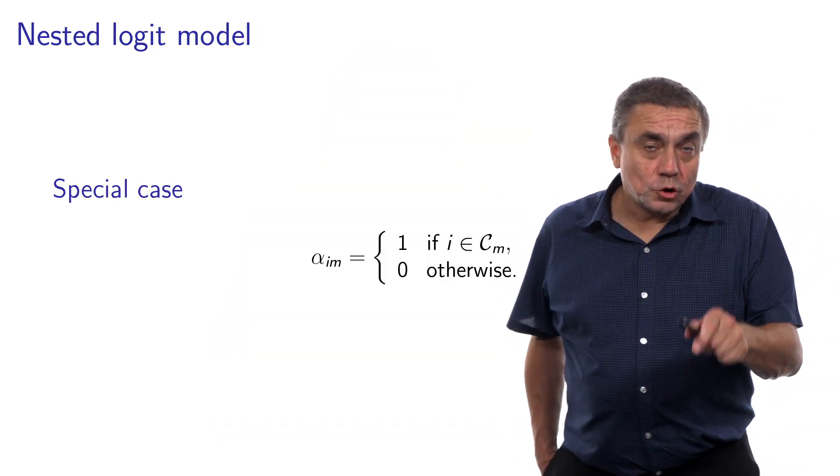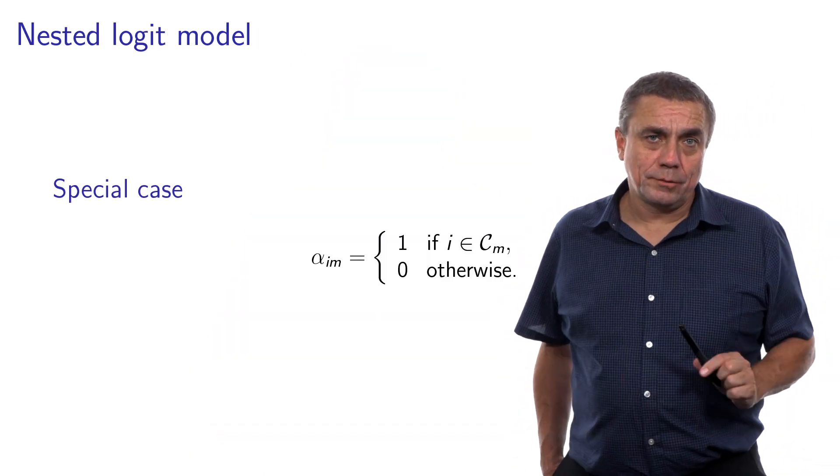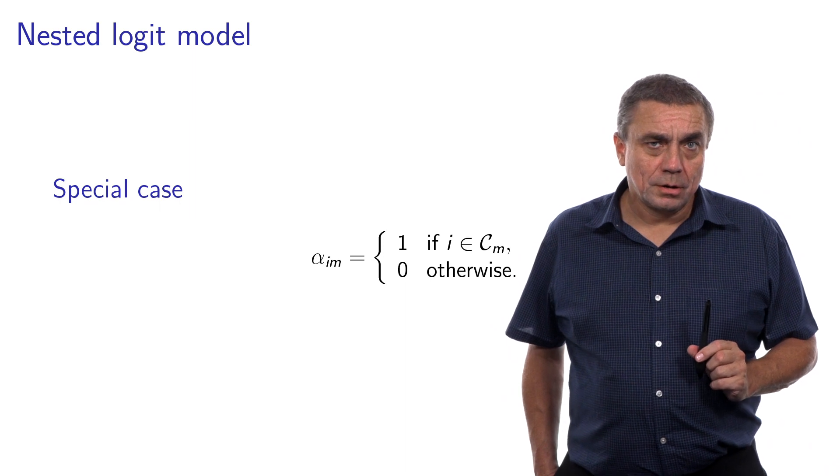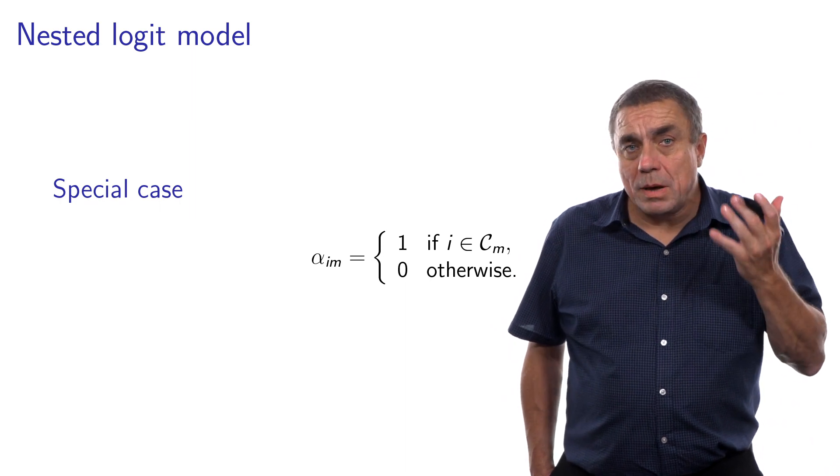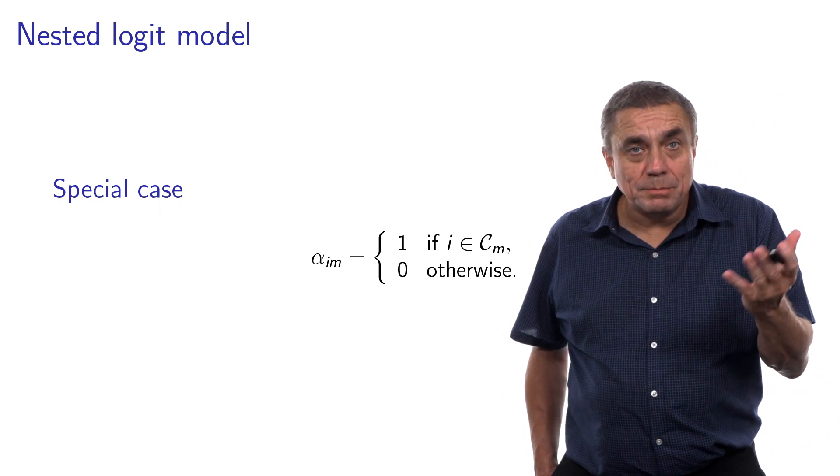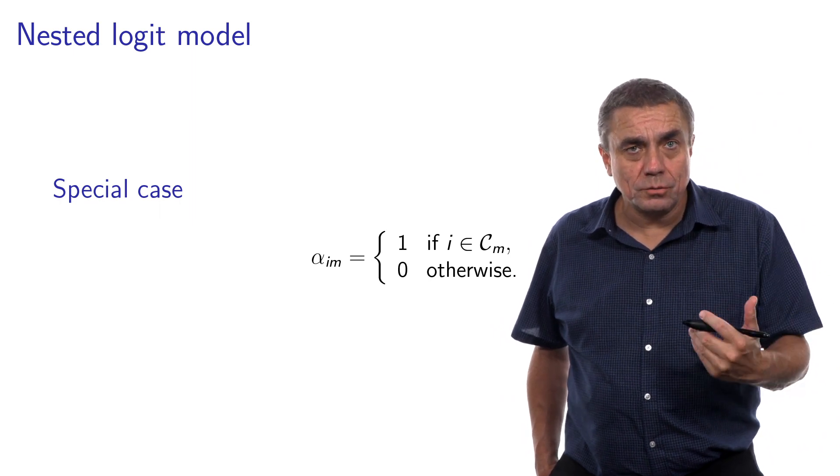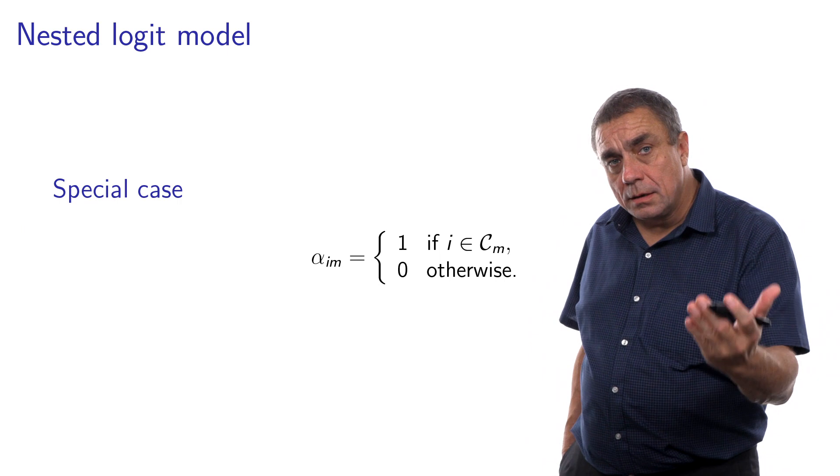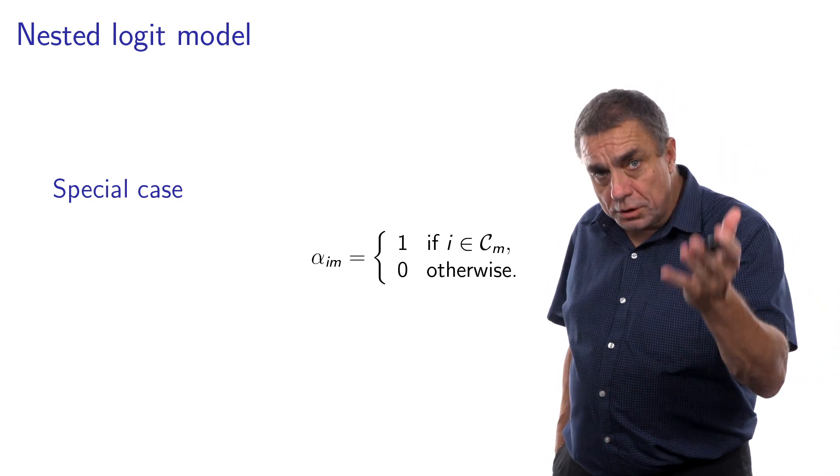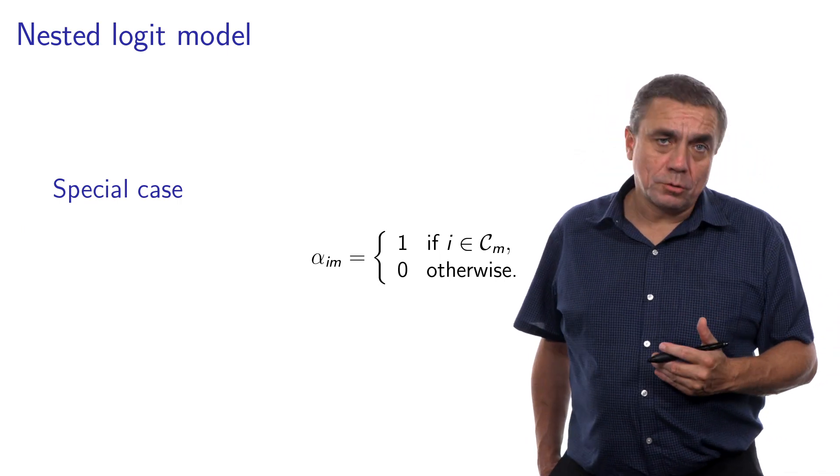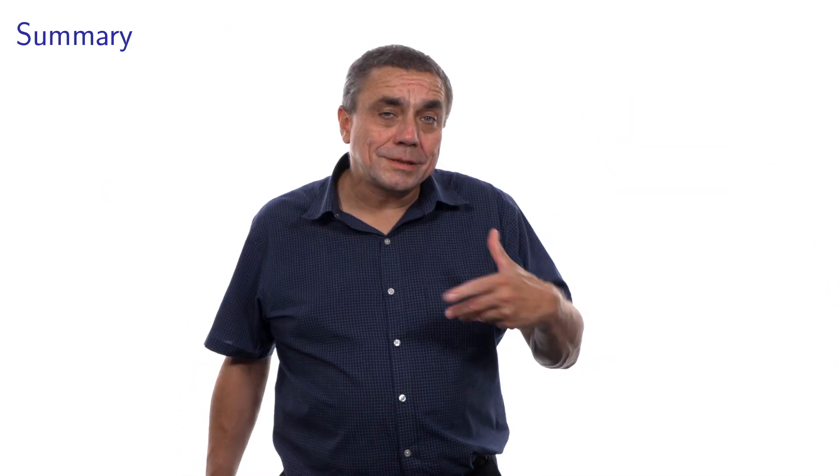And interestingly, the nested logit model is a special case of the cross-nested logit model. Basically, you need to define the membership parameters as 0 or 1, as binary variables, instead of being continuous. 1 means the alternative does belong to the nest, and 0, it does not belong to the nest.